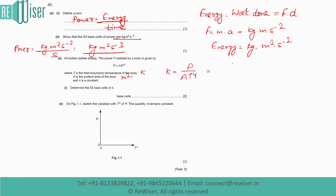Substituting the units: P has units kg·m²·s⁻³, A is m², and T⁴ is K⁴. The m² in the numerator and denominator cancel, leaving units of kg·s⁻³·K⁻⁴.